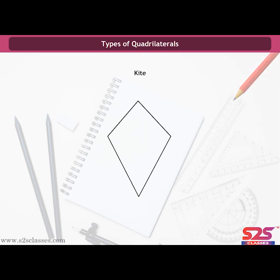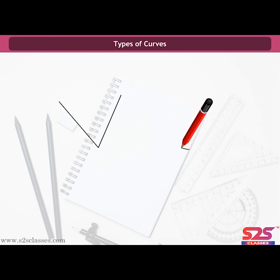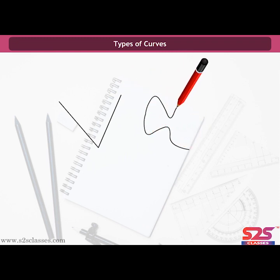Types of quadrilaterals: a kite is a quadrilateral whose adjacent sides are equal — that is, AB equals AD and BC equals CD. Types of curves: curves can be defined as figures that flow smoothly without a break. A line is also a curve and is called a straight curve. Curves that do not intersect themselves are called simple curves.